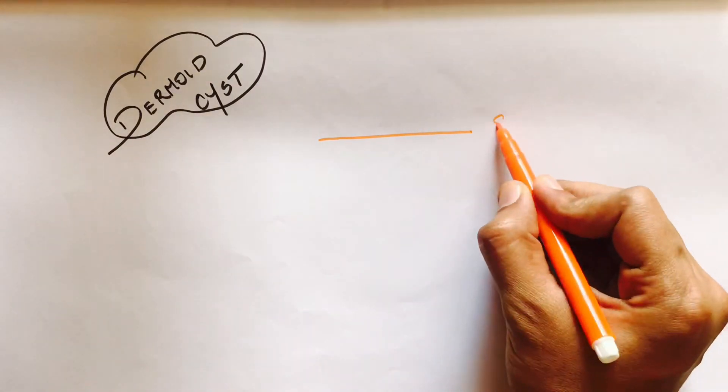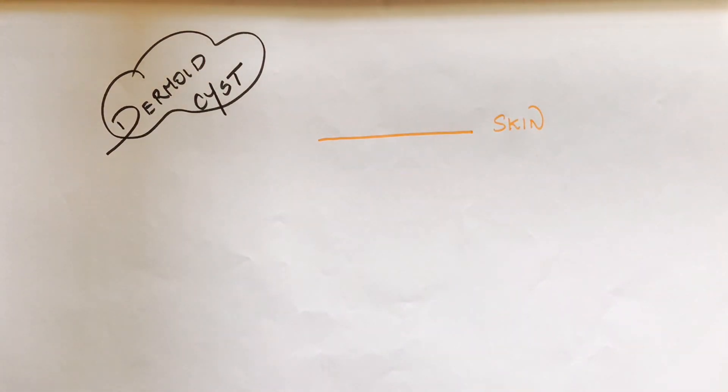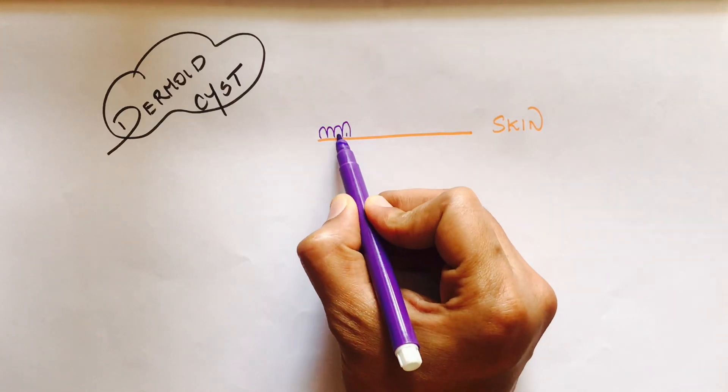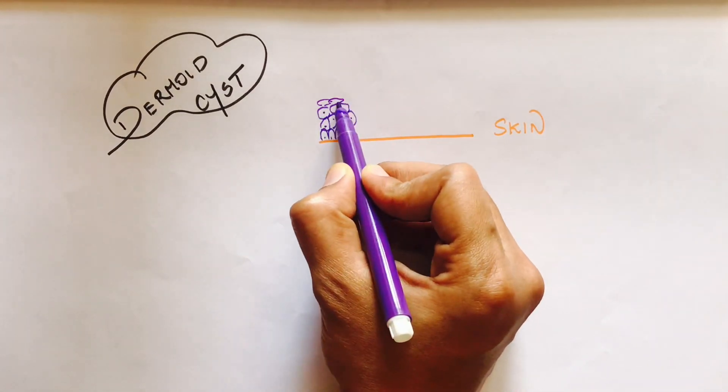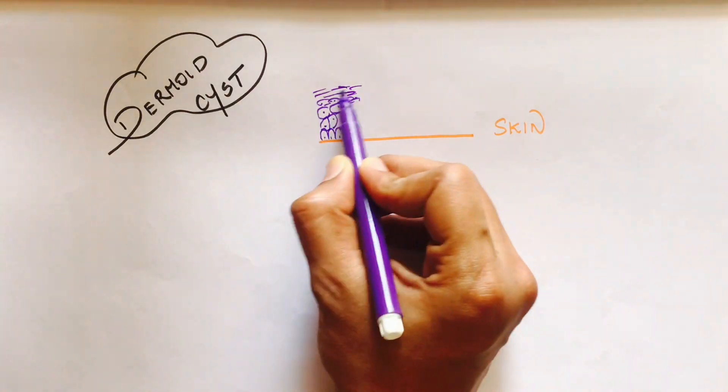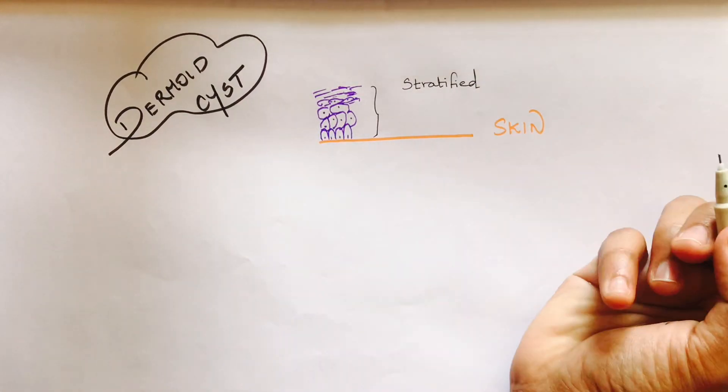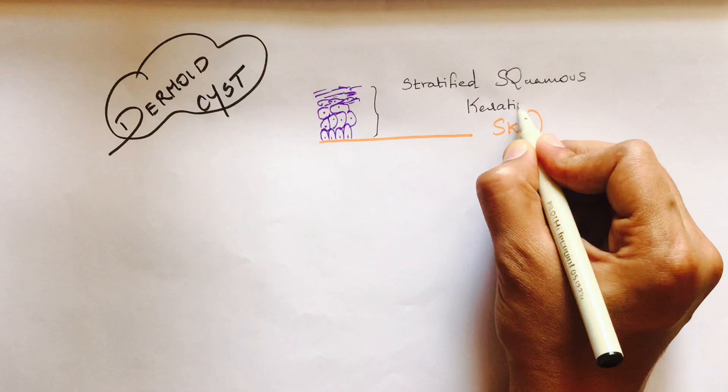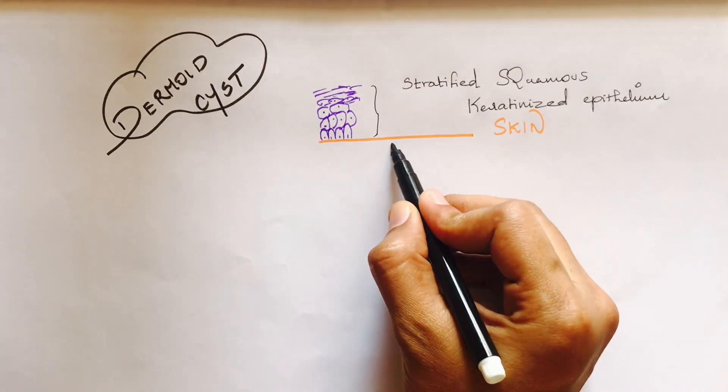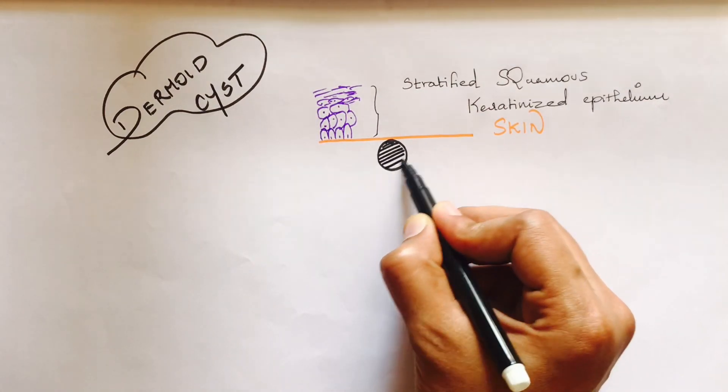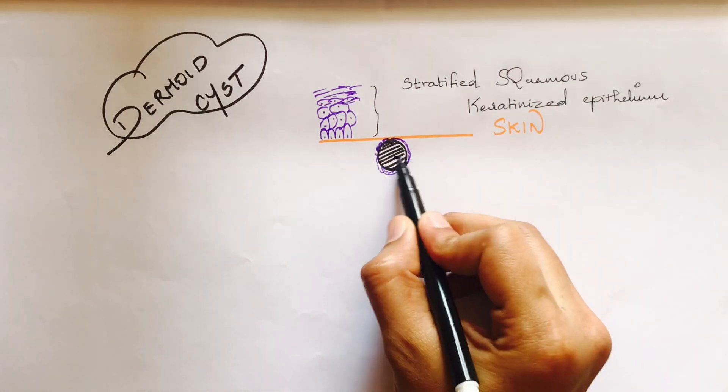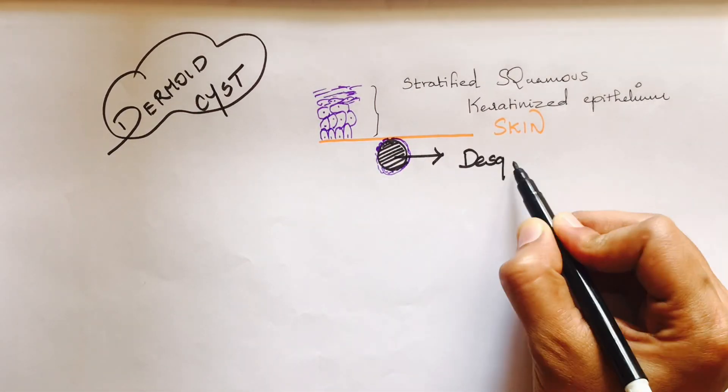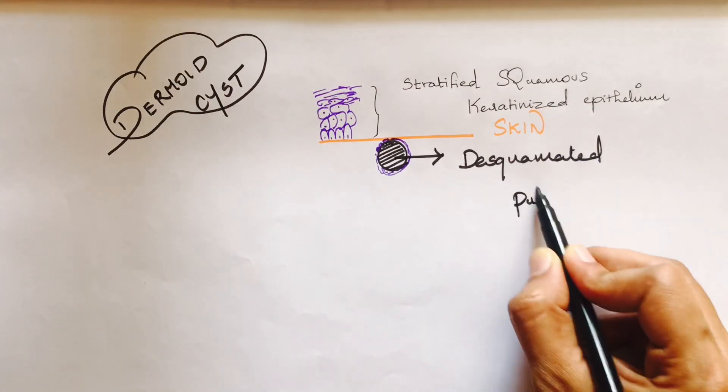What is a dermoid cyst? The cyst lies deep to the skin. The lining epithelium of skin is stratified squamous keratinized epithelium, and the cyst is also lined by squamous epithelium which contains squamated epithelial cells from the skin.